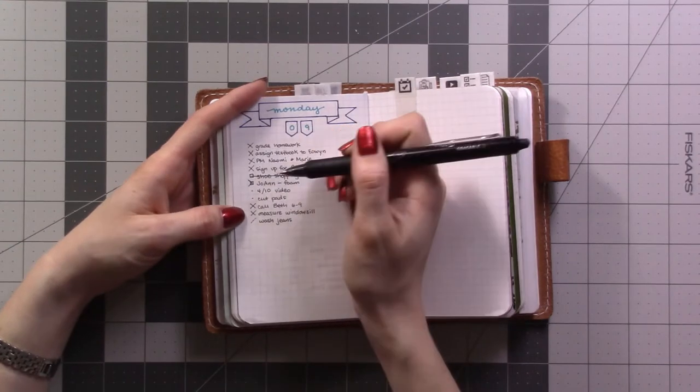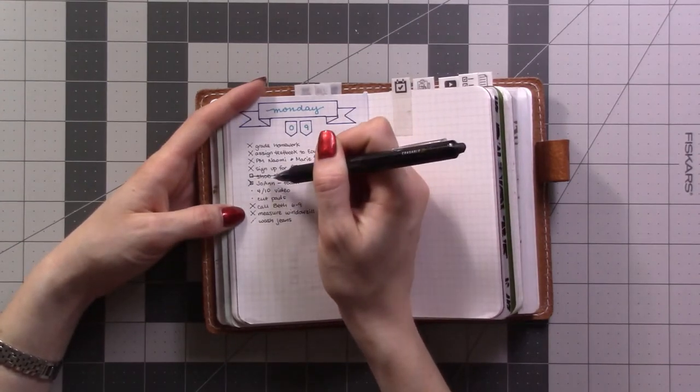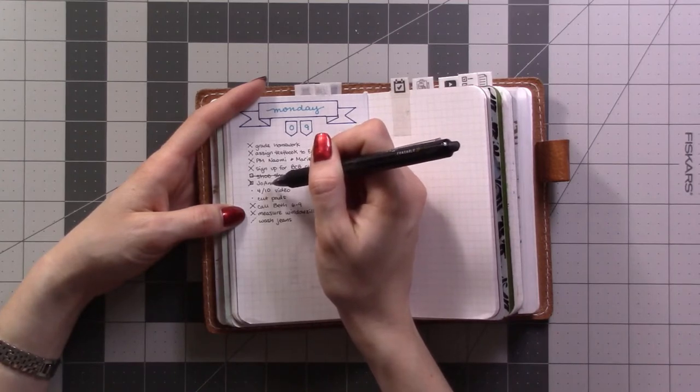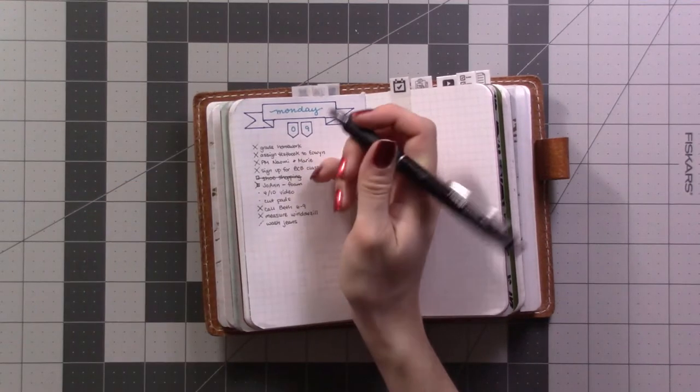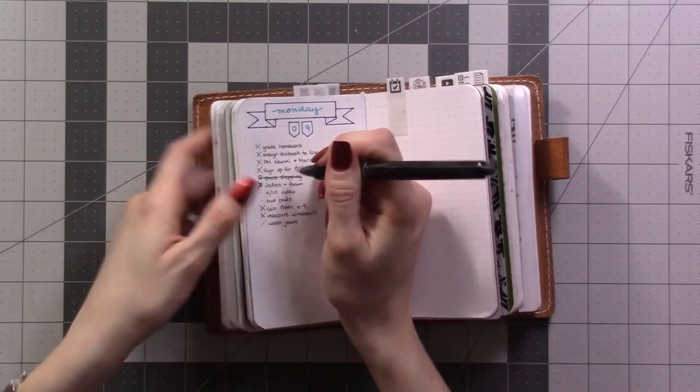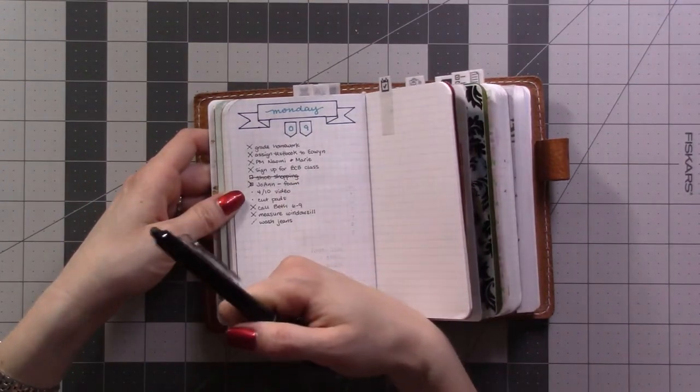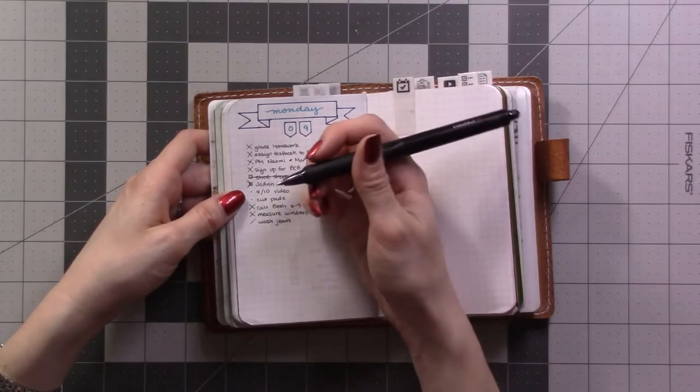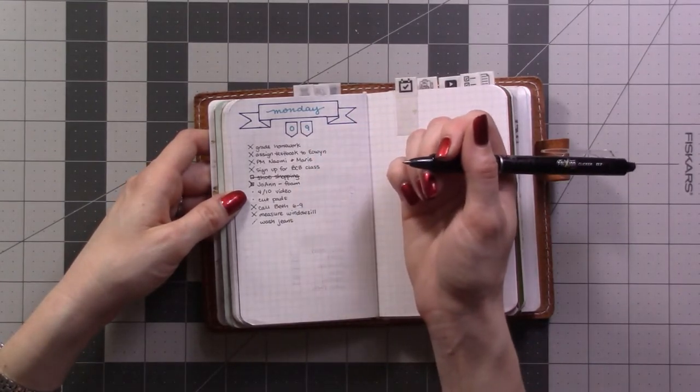I wanted to go shoe shopping for my sister's wedding and I want to go to Joann's and get some upholstery foam because there's a coupon this week for that, and I wanted to make a cushion for our front window.